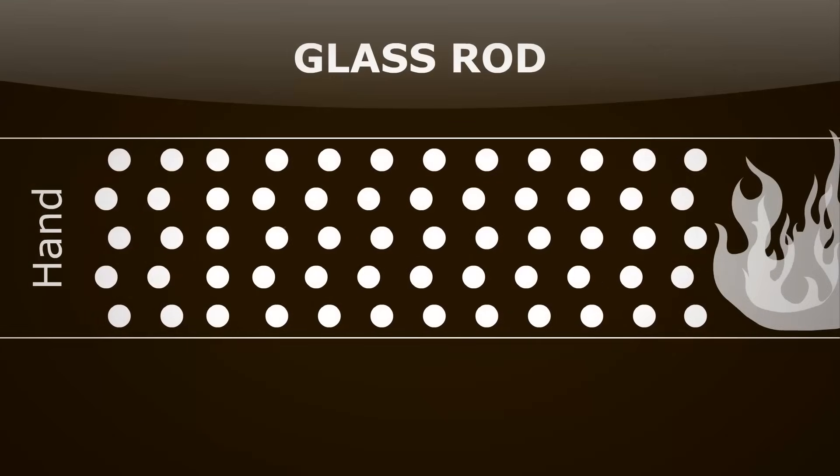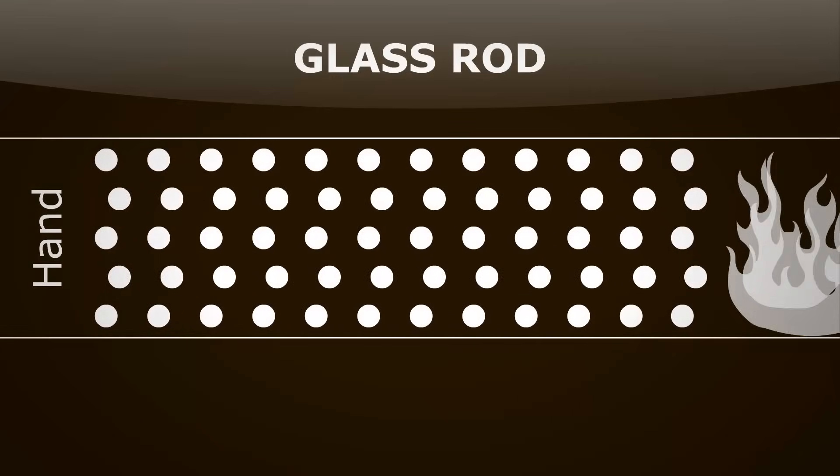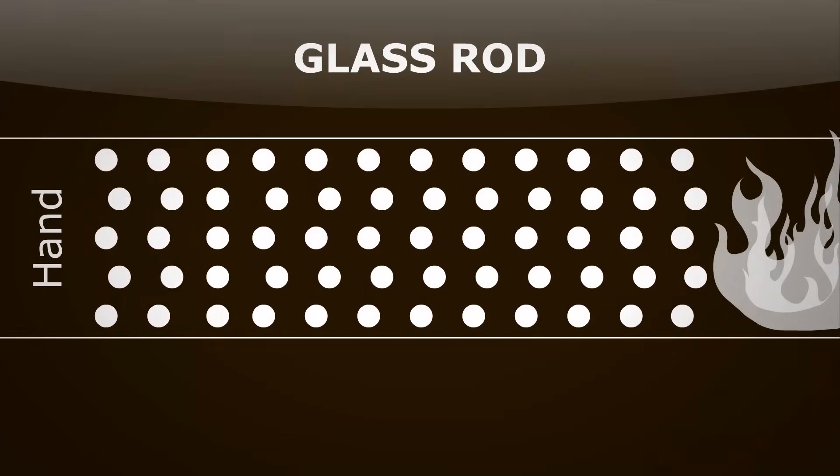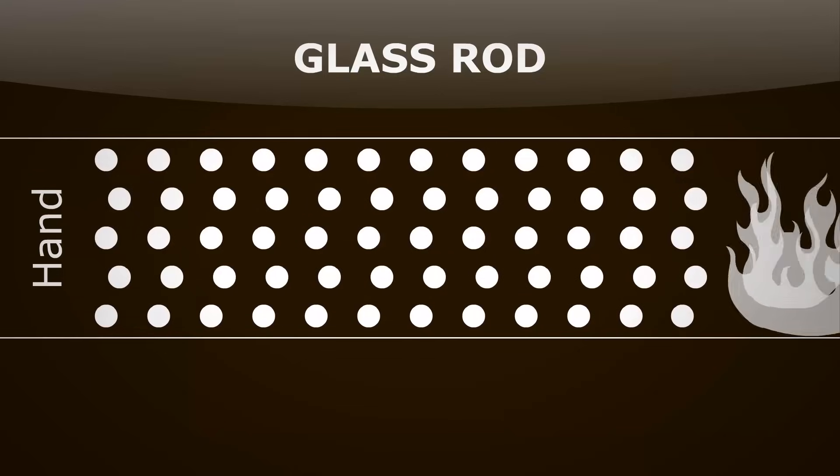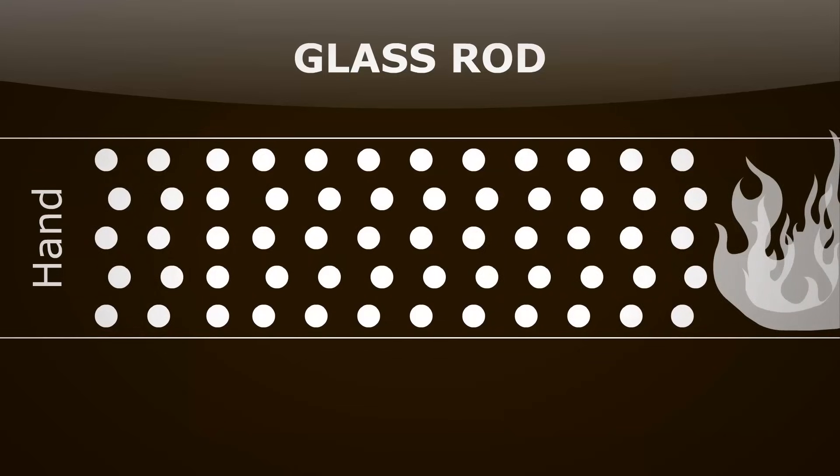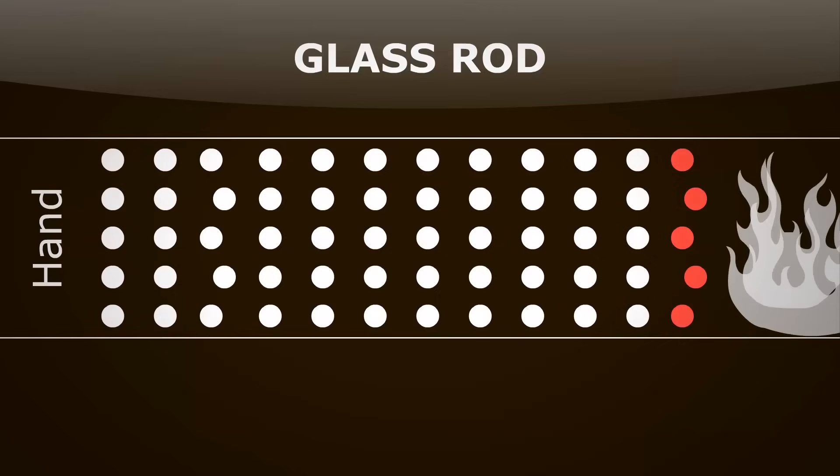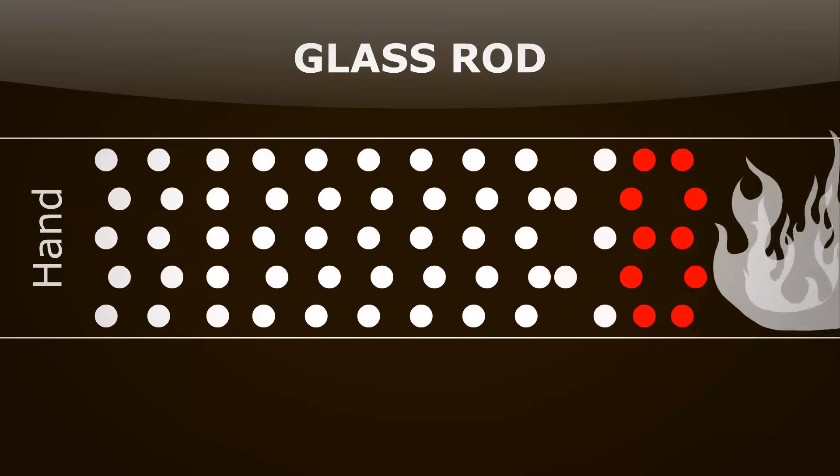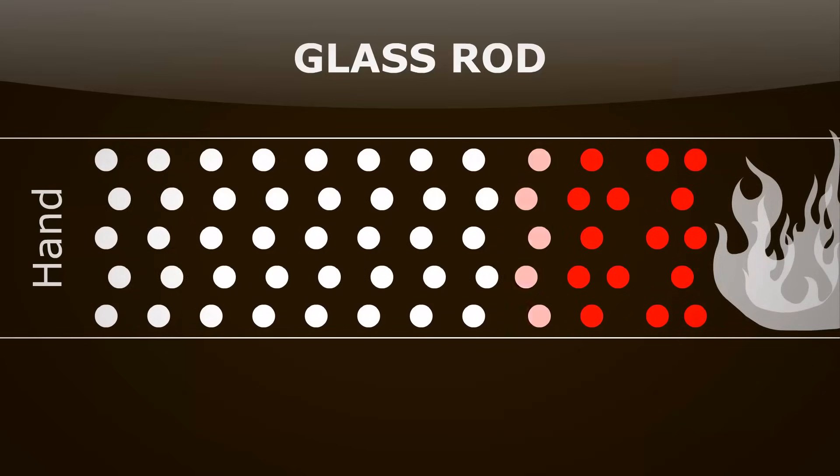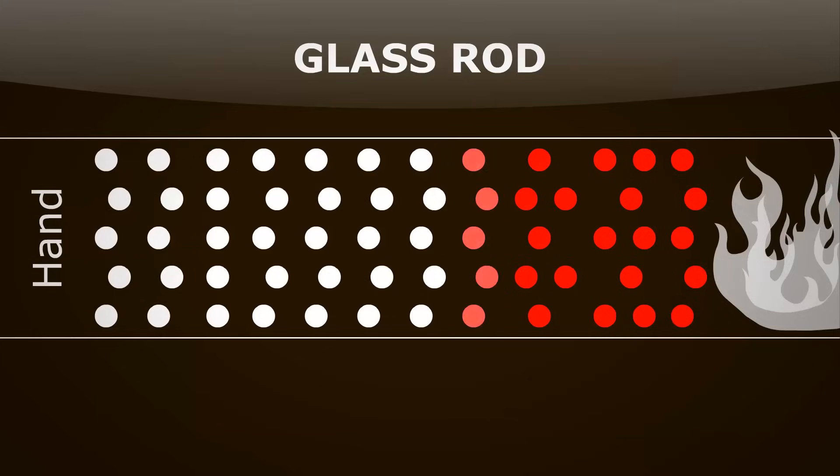Let's zoom in and look at the particles in the glass and see how it conducts. Glass is a typical solid in the way it conducts. The particles by the fire start to gain heat from it and start to vibrate much more vigorously. They then collide with the particles next to them, passing on the energy.